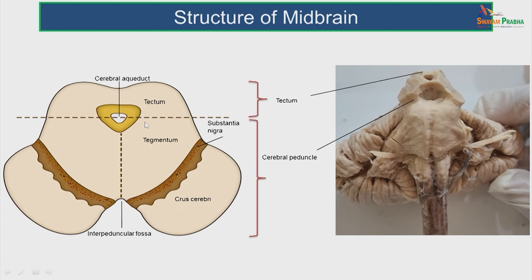In the internal cut section, as stated, anteriorly is the cerebral peduncle, and posterior to the cerebral aqueduct is the tectum. The cerebral peduncle is divided: the anterior part is the crus cerebrae, which continues as the basilar part of the pons and the pyramid. Dorsal to that is a darkened pigmented area called the substantia nigra. Then dorsal to that is the tegmentum, and posterior to the aqueduct is the tectum. From anterior to posterior: crus cerebrae, substantia nigra, tegmentum, and tectum.